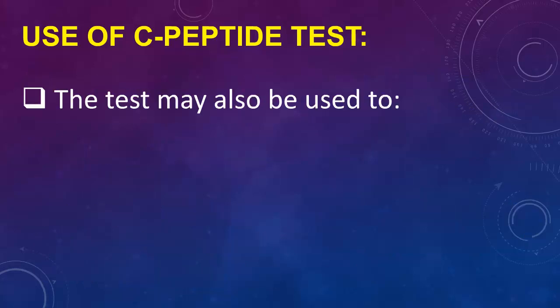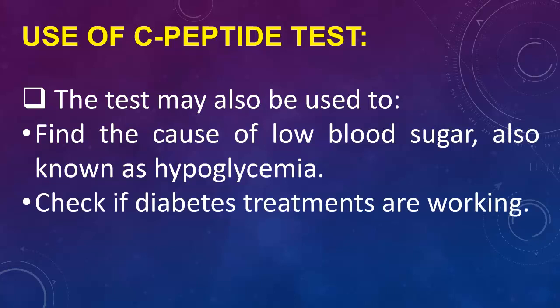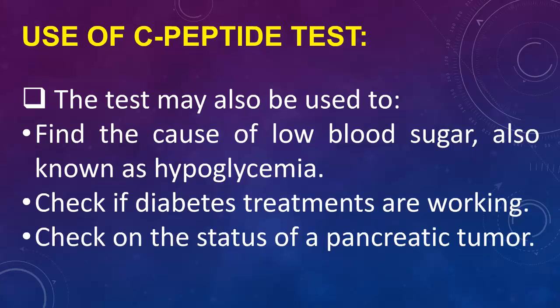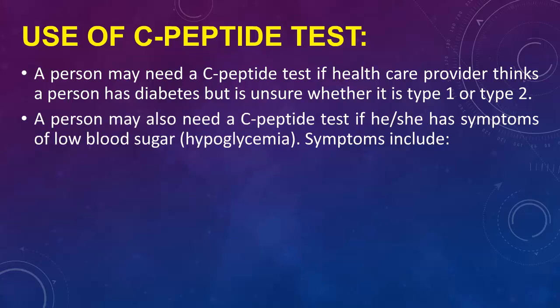The test may also be used to find the cause of low blood sugar, also known as hypoglycemia, check if diabetes treatments are working, and check on the status of a pancreatic tumor. A person may need a C-peptide test if their health care provider thinks they have diabetes but is unsure whether it is type 1 or type 2. A person may also need this test if they have symptoms of low blood sugar.